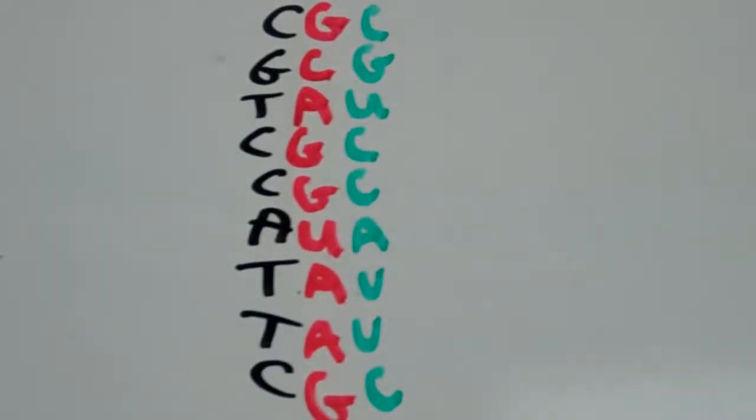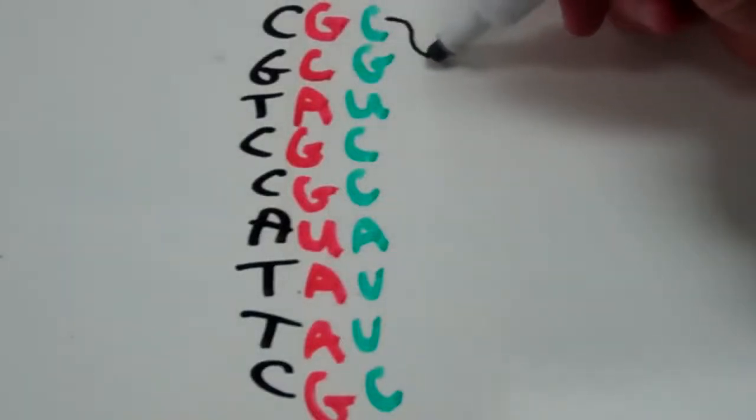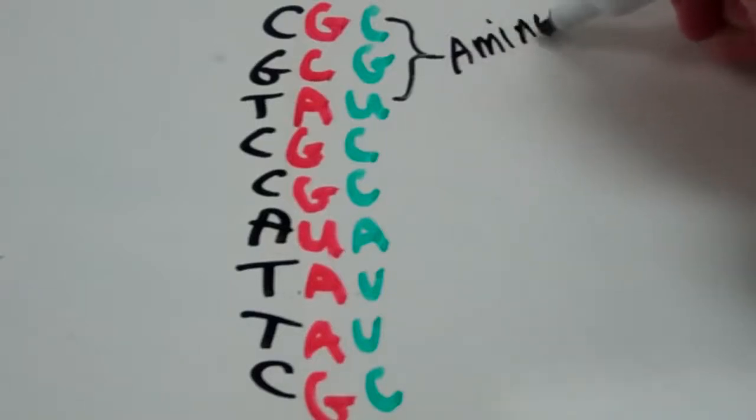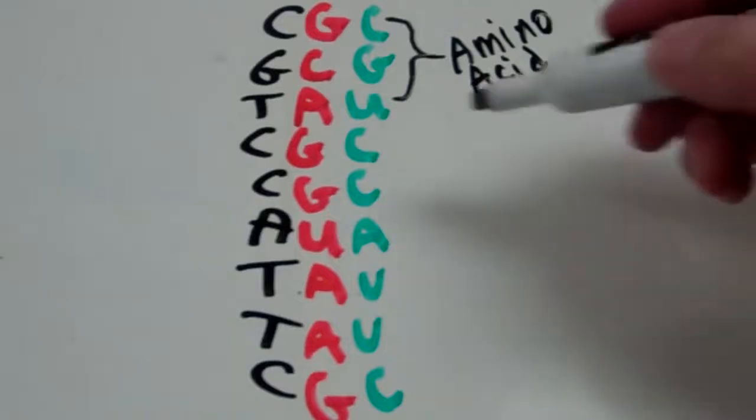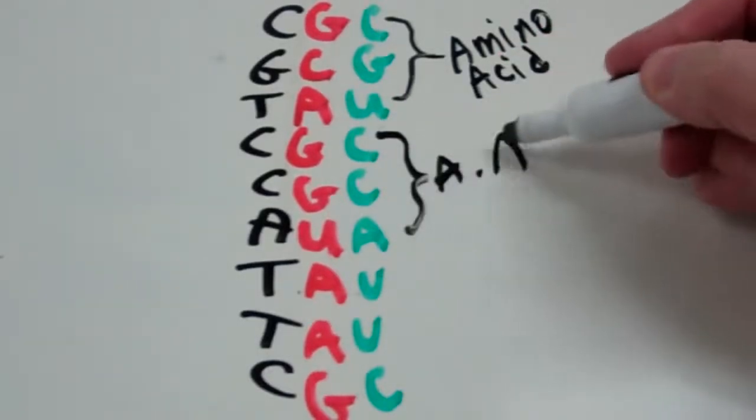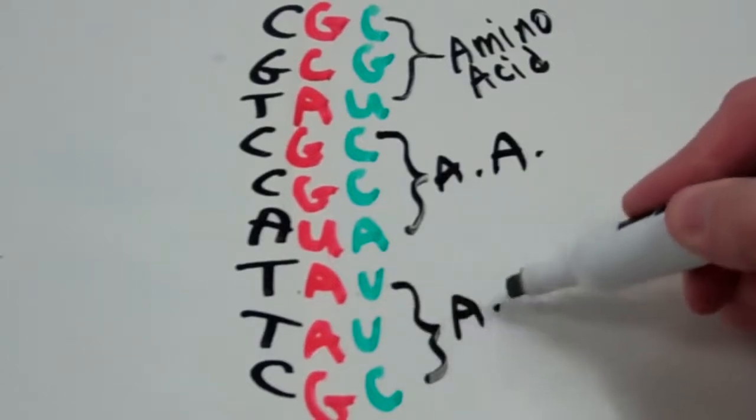And I might ask, how many amino acids is this genetic code going to code for? Basically, every three bases in a row is going to be carrying one amino acid. So this would code for a particular amino acid, this one would code for a particular amino acid, and then this one would also code for an amino acid.